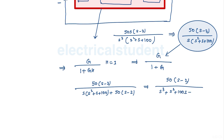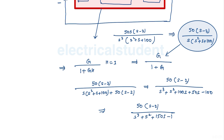The final answer is 50(s minus 2) over (s³ + s² + 150s minus 100). This is the final answer.